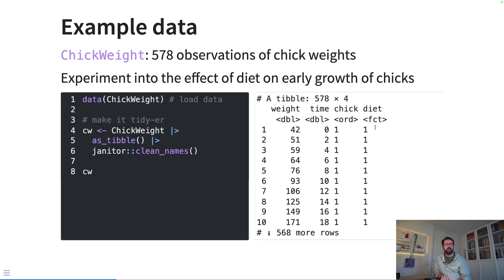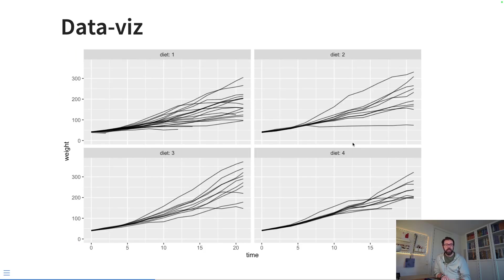Then we have a factor for the chicks, and we also have a factor for the diet. The chicks were fed one of four different diets, and so we're going to try and model the different growth weights on the different diets as well as modeling the growth weights of the individual chicks.